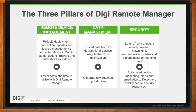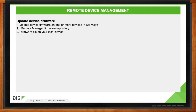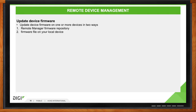For remote device management, first and foremost you have to be able to update your firmware remotely. With Digi Remote Manager, you can update firmware in two ways: directly from our firmware repository on the platform, where we publish all available firmwares, or you can load a local firmware version from your device into Digi Remote Manager - perhaps one you've edited or tweaked - and push that firmware to other devices or create a master copy.